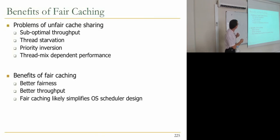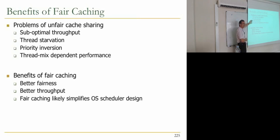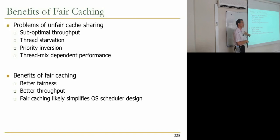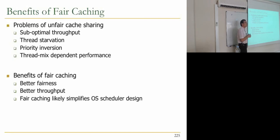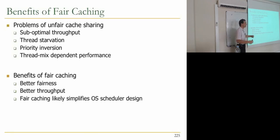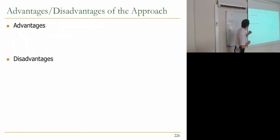The benefits of fair caching: unfair cache sharing causes suboptimal throughput, thread starvation, and priority inversion — a high-priority application gets less cache. With fair caching you solve these problems. You get better fairness and better throughput, and can likely simplify OS scheduler design because the OS assumes allocated applications will make progress and not starve. The slowdown-based approach provides proportional progress to all applications compared to when they run alone.